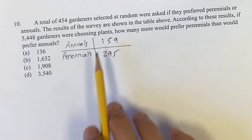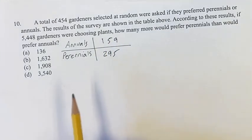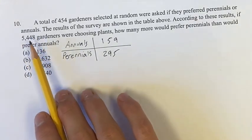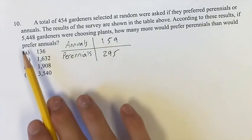Out of the 454, 159 chose annuals, 295 chose perennials. And we're asked if 5,448 gardeners were choosing, how many more would prefer perennials than would prefer annuals?